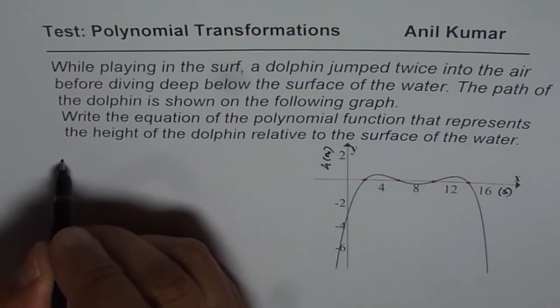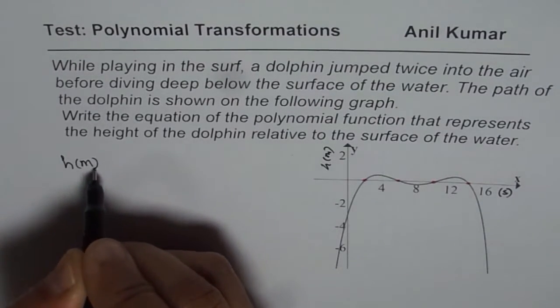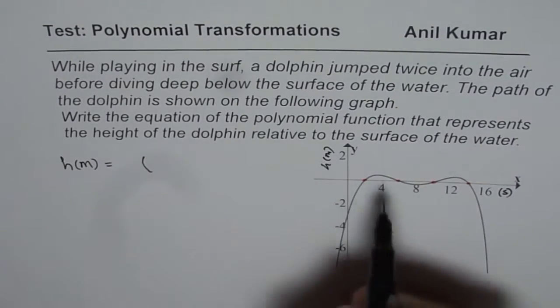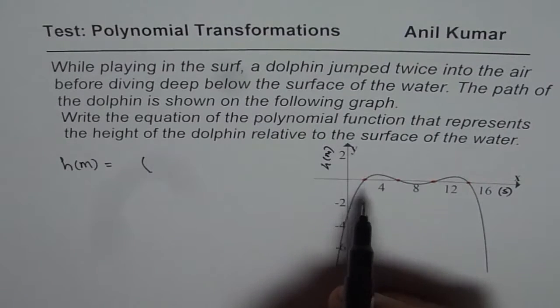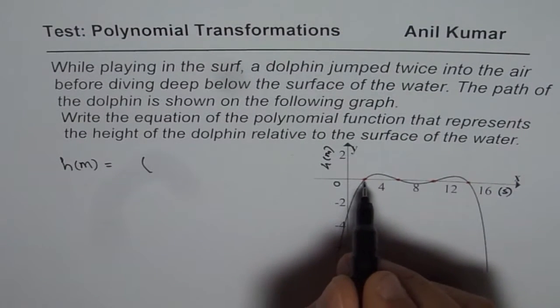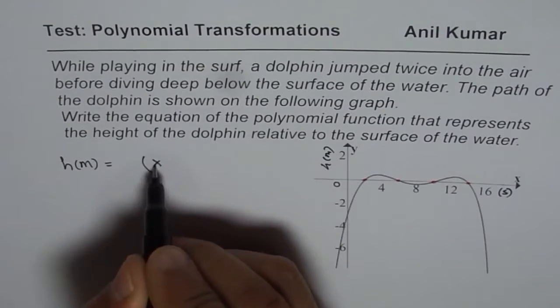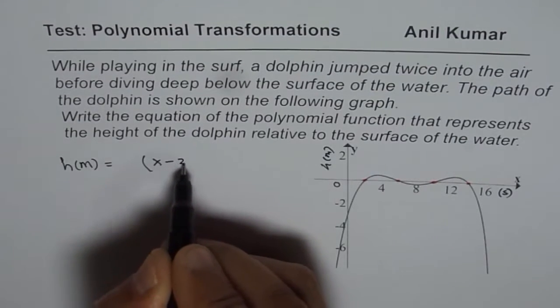Therefore, we can write height in meters as equal to the factors are all linear. So the first one, the scale is from 0 to 4. This one is at 2. So the first factor will give you 0 at x minus 2.